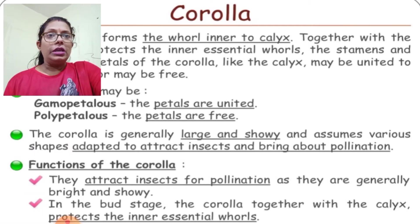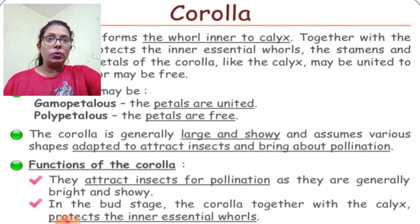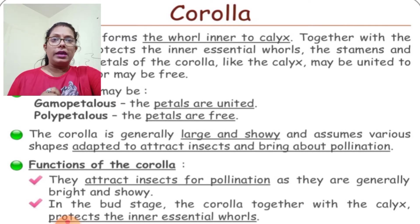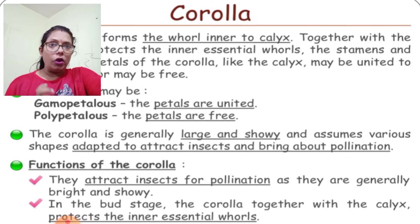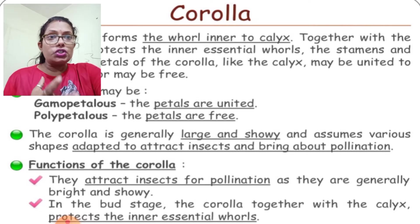Next is the corolla, which is the second whorl of the flower. Together with the calyx, it provides protection to the flower in the bud stage. Corolla also covers and protects the two inner essential whorls — stamen and pistil. It acts like the costume of stamen and pistil. If this costume of calyx and corolla is absent, the flower is known as a naked flower.